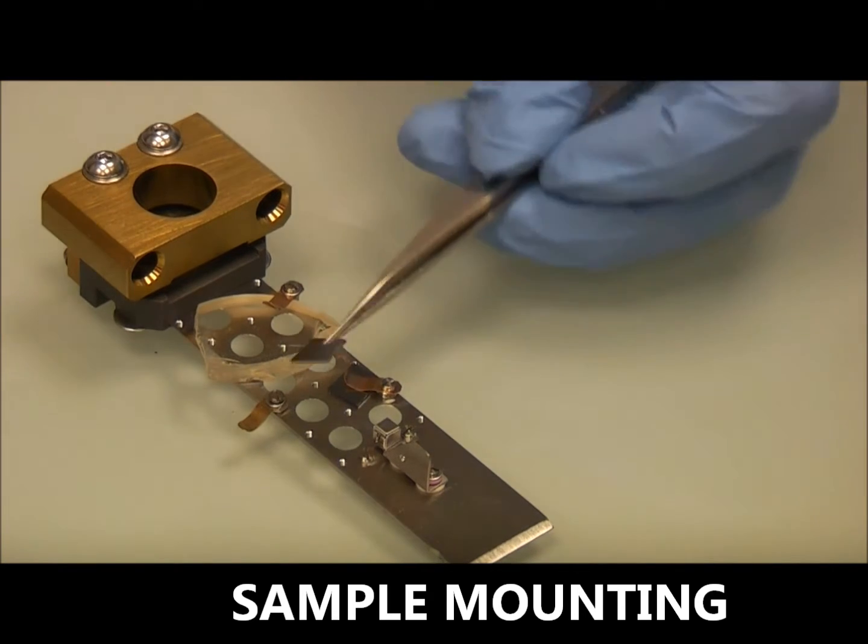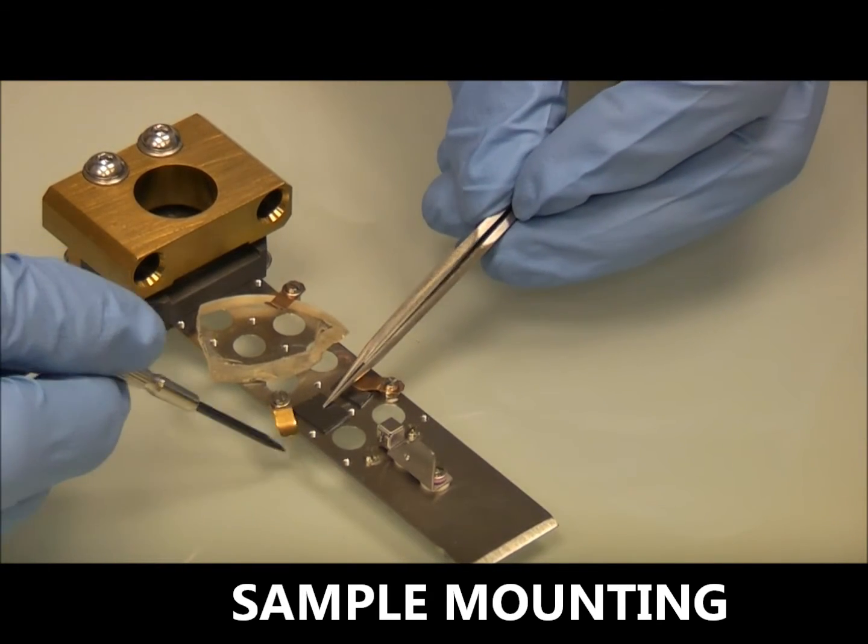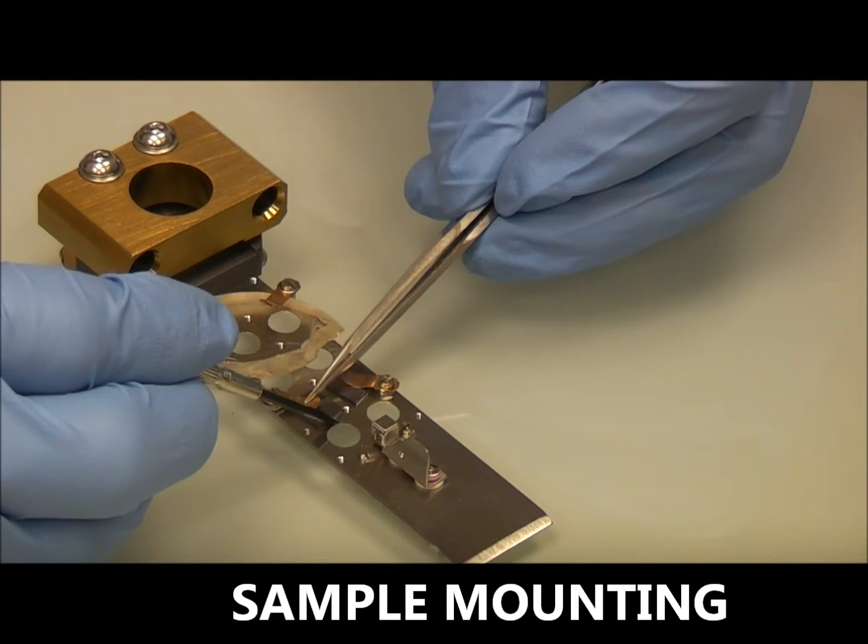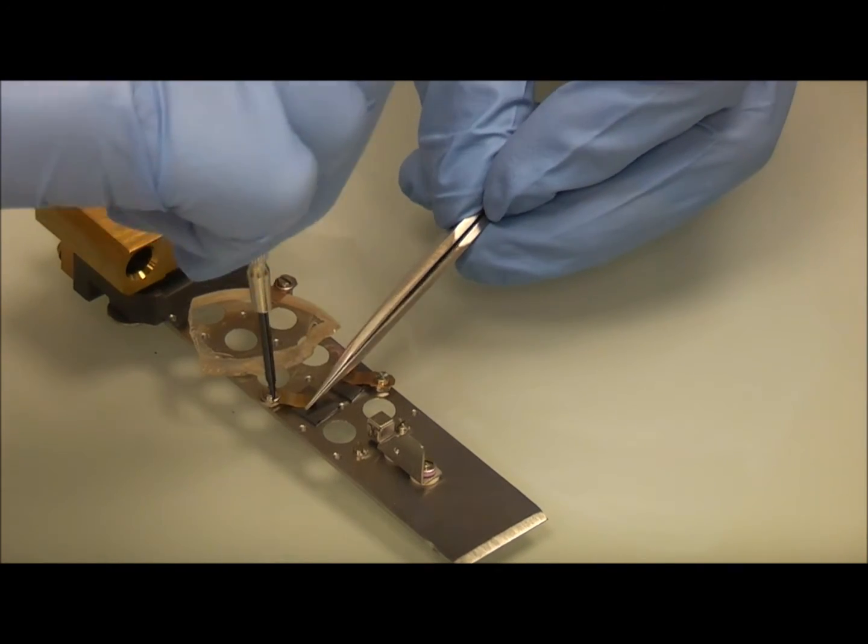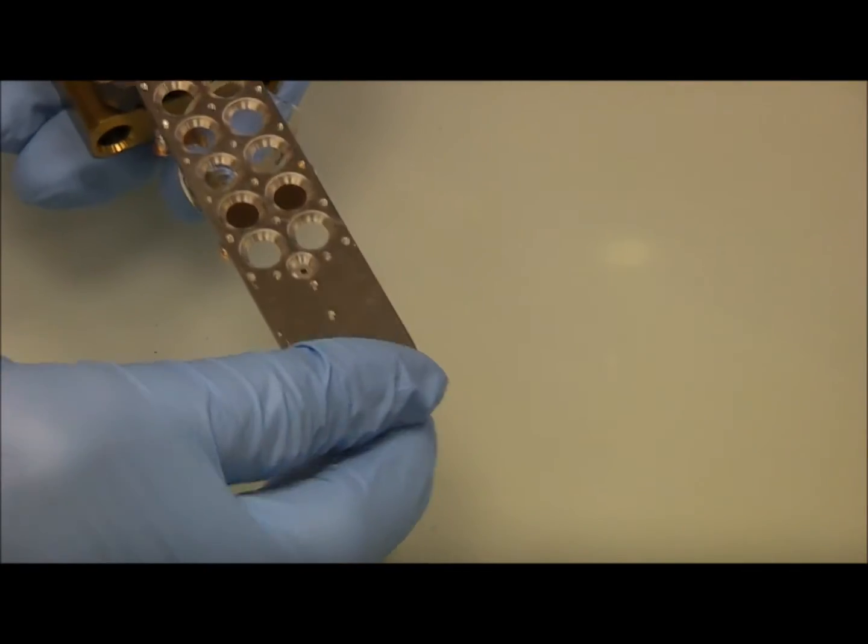The standard sample mounting plate holds up to ten samples with a wide range of thickness, each secured by a spring clip. Mounting is from the underside to ensure the specimen surface is located at the optimum analysis plane.